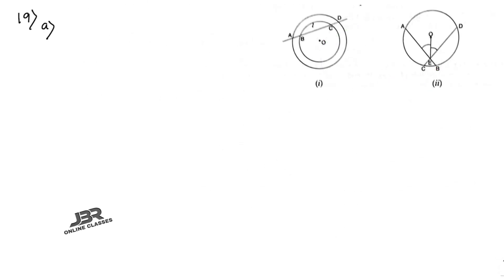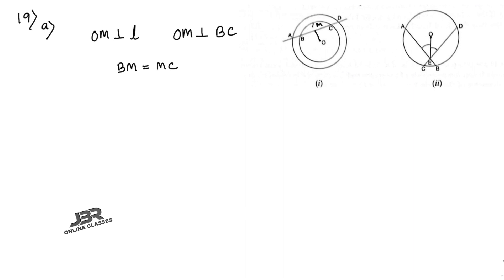Sum 19a: a line L intersects two concentric circles at points A, B, C, D. Prove that AB equals CD. Construct a perpendicular from the center O to line L; call the foot OM. Since OM is perpendicular to BC, M is the midpoint, so BM equals MC.